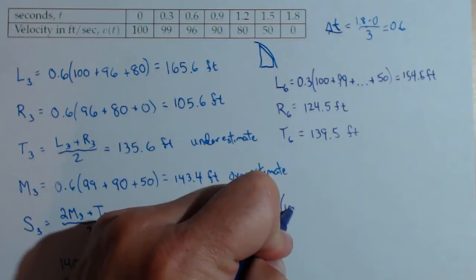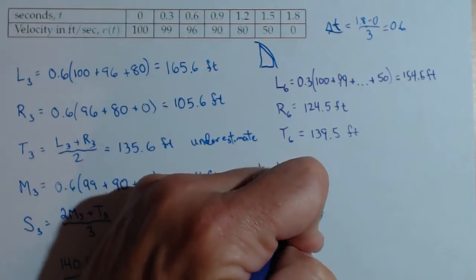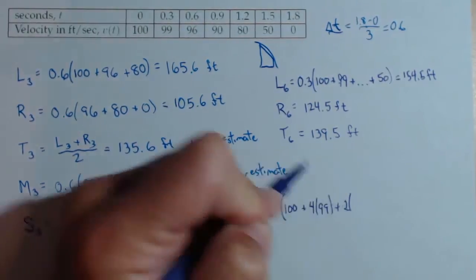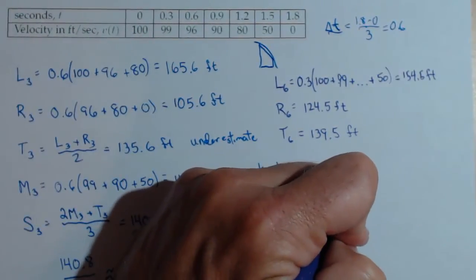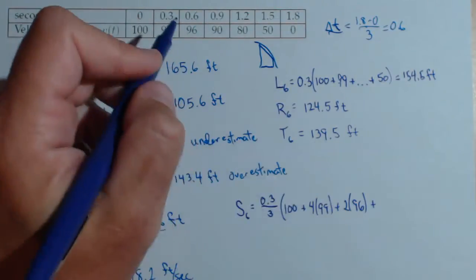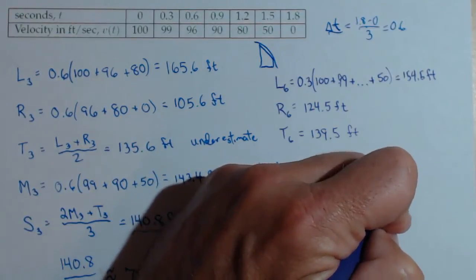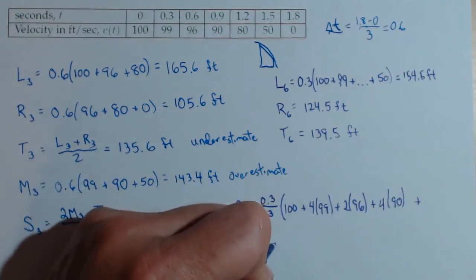And now, this is the weighting that you saw in the lesson. It's going to be the first output plus four times the second output. Now we get this pattern. Plus two times the third output. Plus, now it just goes back and forth. Four, two. So four times 90. Plus, I'm going to have to go down to the next line here.